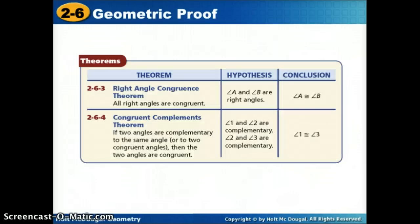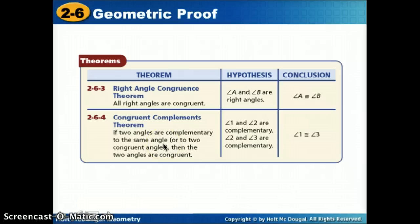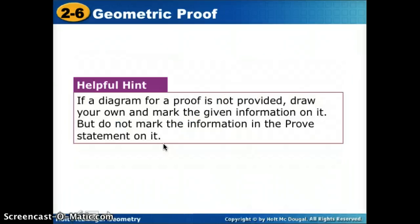Two more theorems: the right angle congruence theorem simply says all right angles are congruent to each other — if A and B are both right angles, then A is congruent to B. The congruent complements theorem says if two angles are complementary to the same angle, then they are congruent. As a helpful reminder: if a diagram is not provided, draw your own and mark the given information on it, but do not mark the information in the prove statement.